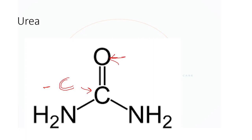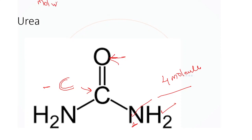Urea contains carbon, oxygen, nitrogen, and hydrogen — four types of molecules. The molecular weight of urea is approximately 60.